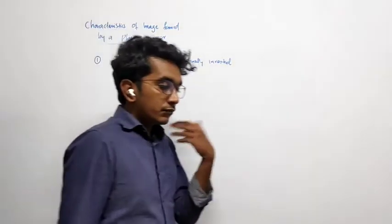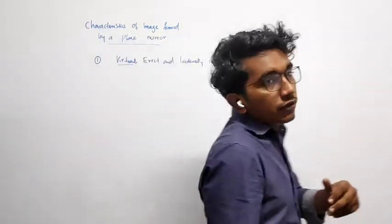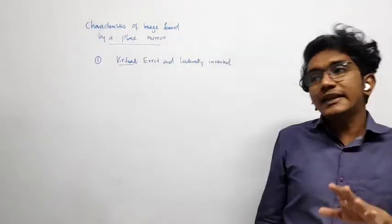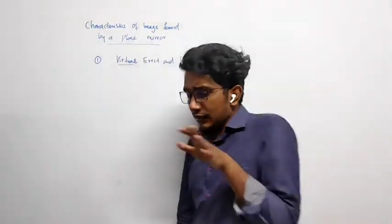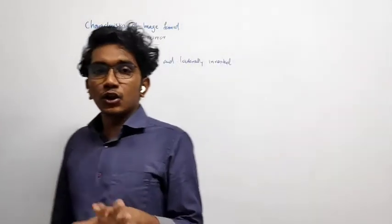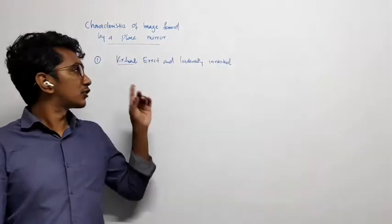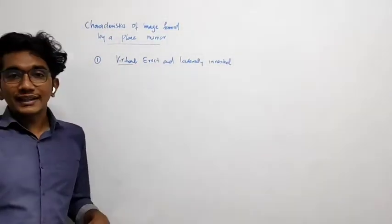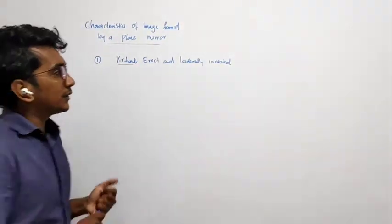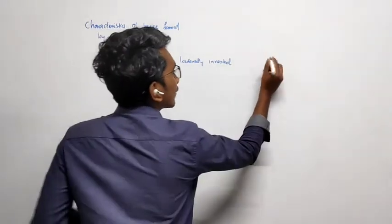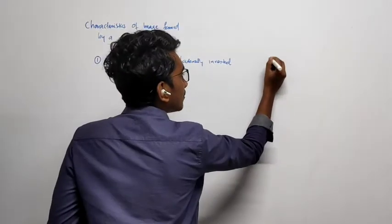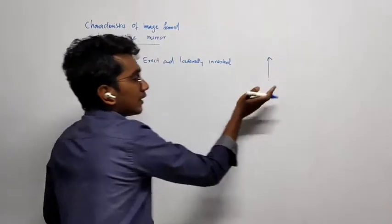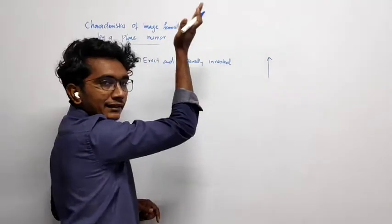So what is the meaning of real and virtual? Keep that question in mind. And what is the meaning of erect? Erect means the image is in the same orientation as the object — upright, like this.